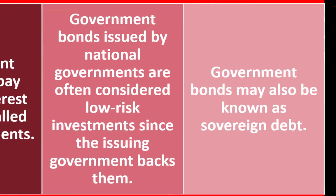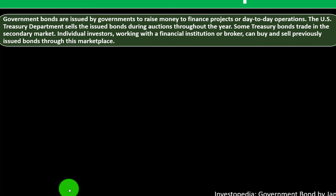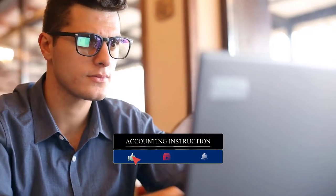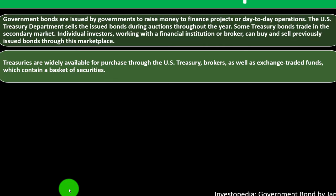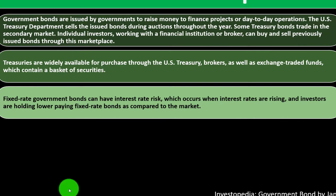Government bonds are issued by governments to raise money to finance projects or day-to-day operations. The US Treasury Department sells issued bonds during auctions throughout the year. Some treasury bonds trade in the secondary market, where individual investors working with a financial institution or broker can buy and sell previously issued bonds. Treasuries are widely available for purchase through the US Treasury, brokers, as well as exchange-traded funds which contain a basket of securities, allowing us to consider how bonds fit into our allocation mix.